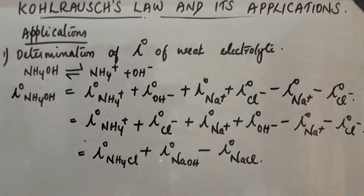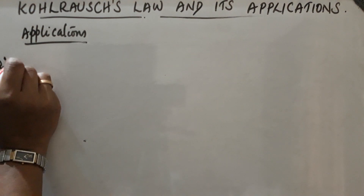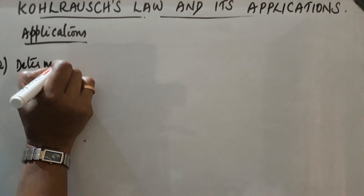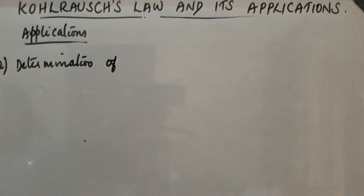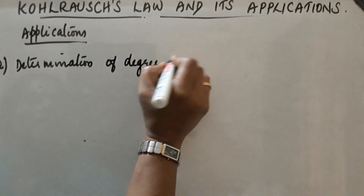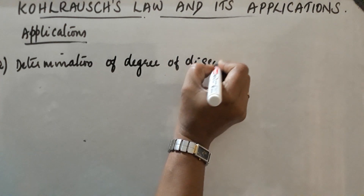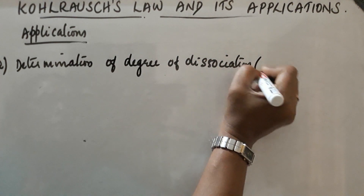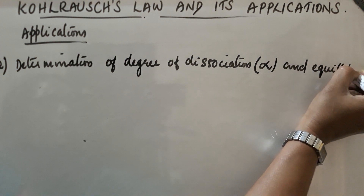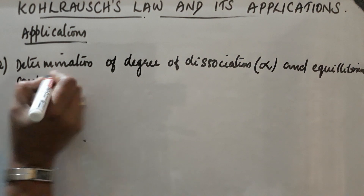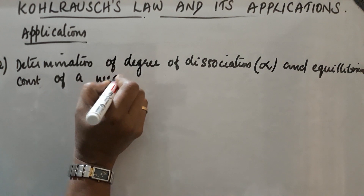So if we know the limiting molar conductivity of NH₄Cl, NaOH, and NaCl, we can obtain the limiting molar conductivity of the weak electrolyte NH₄OH. This is one application. The next application is the determination of degree of dissociation (α) and equilibrium constant (K) of a weak electrolyte.